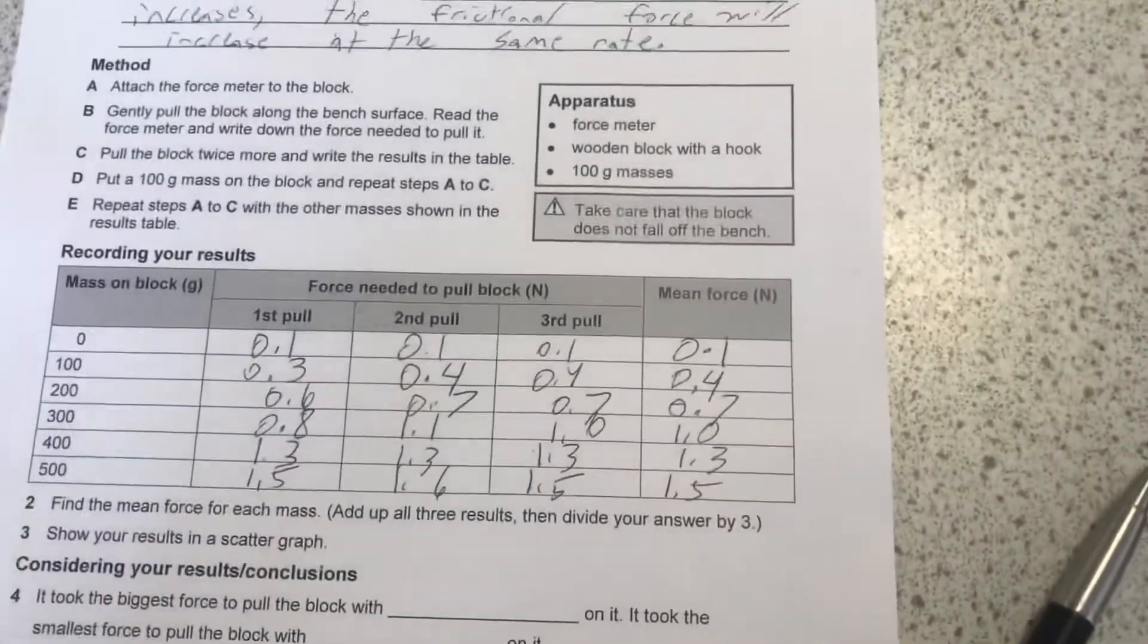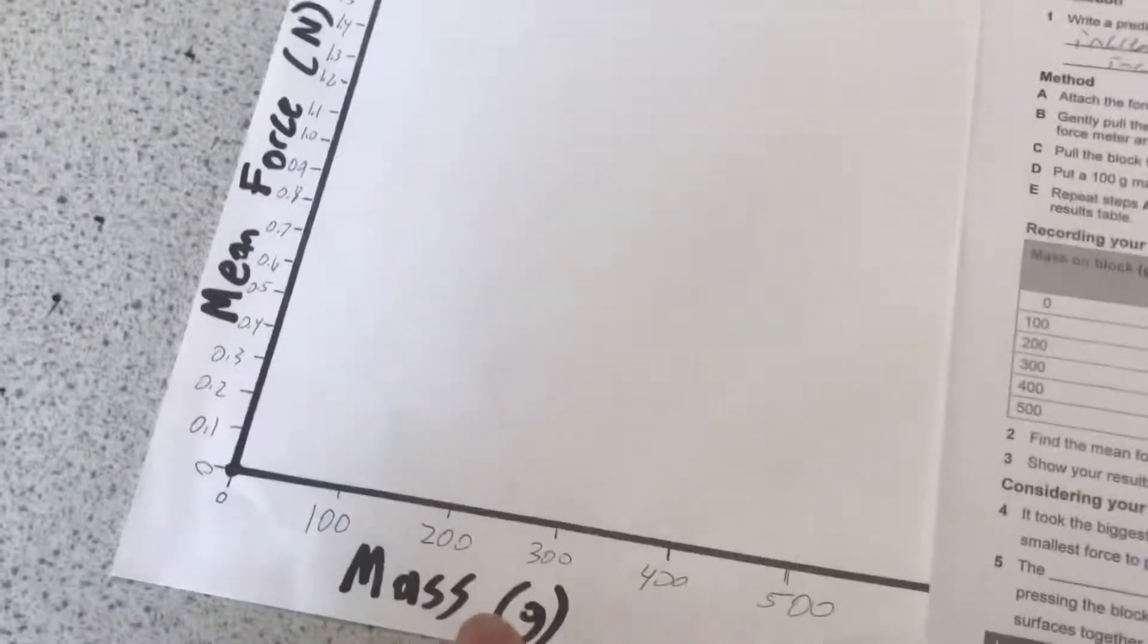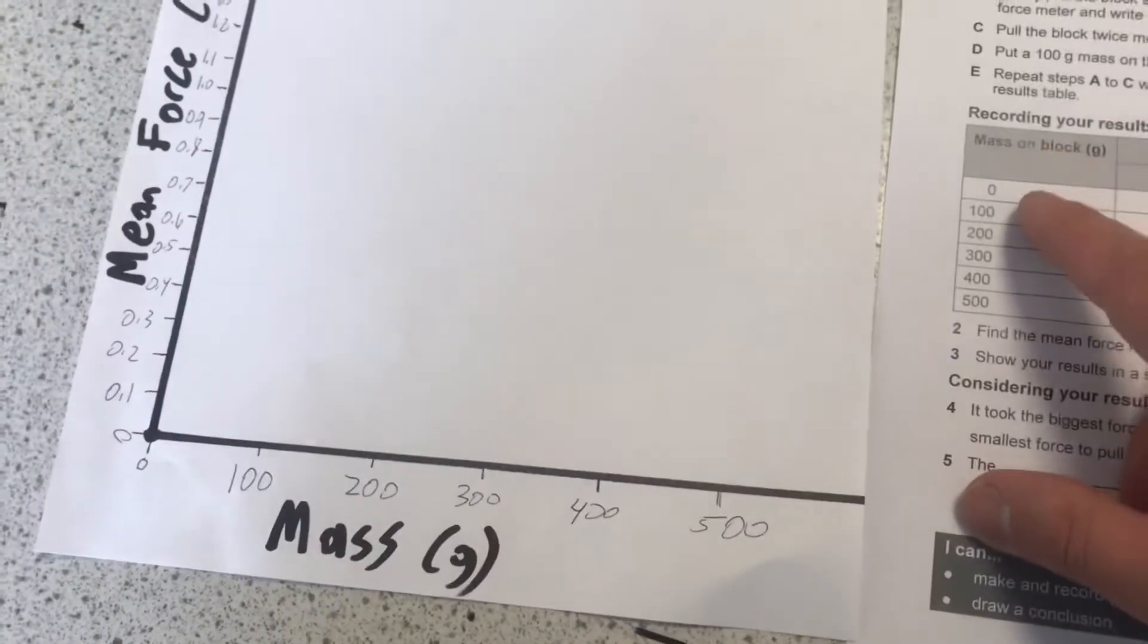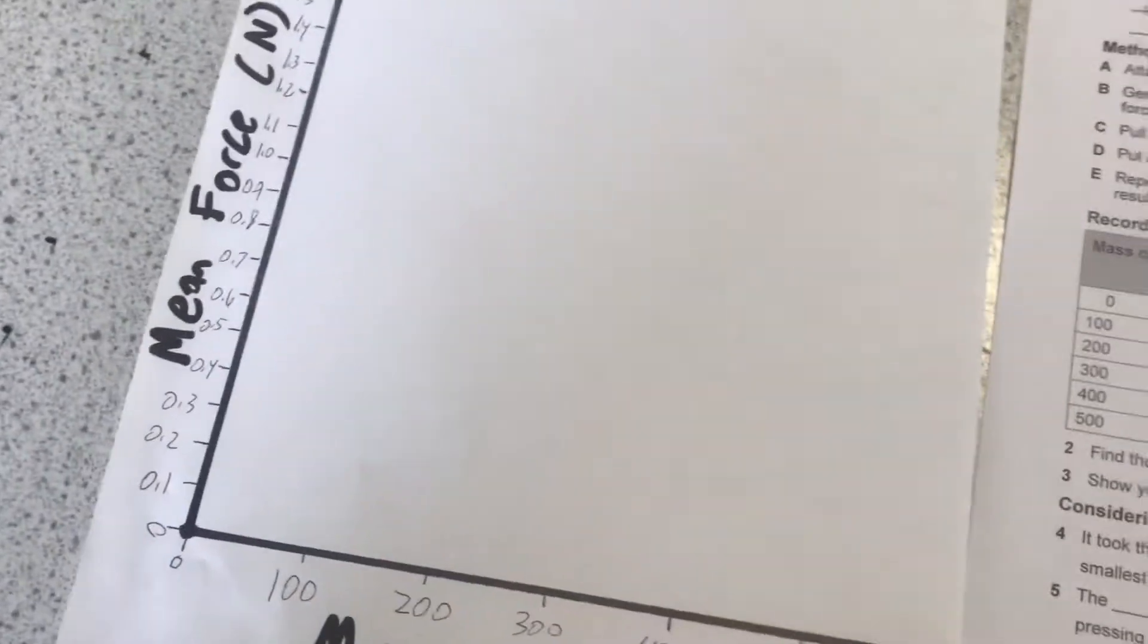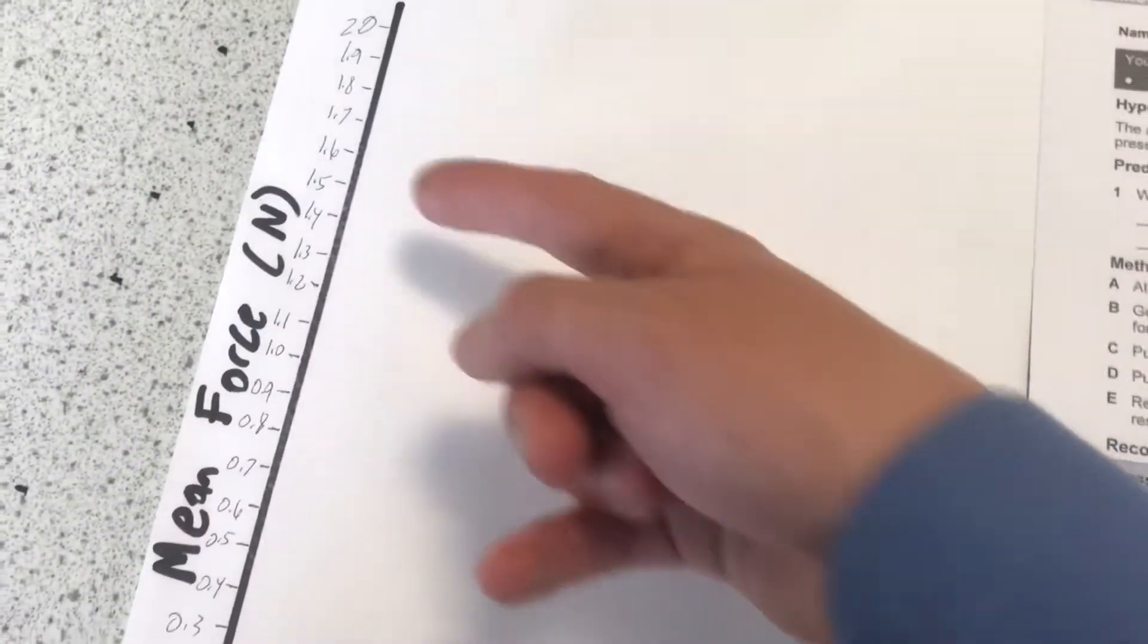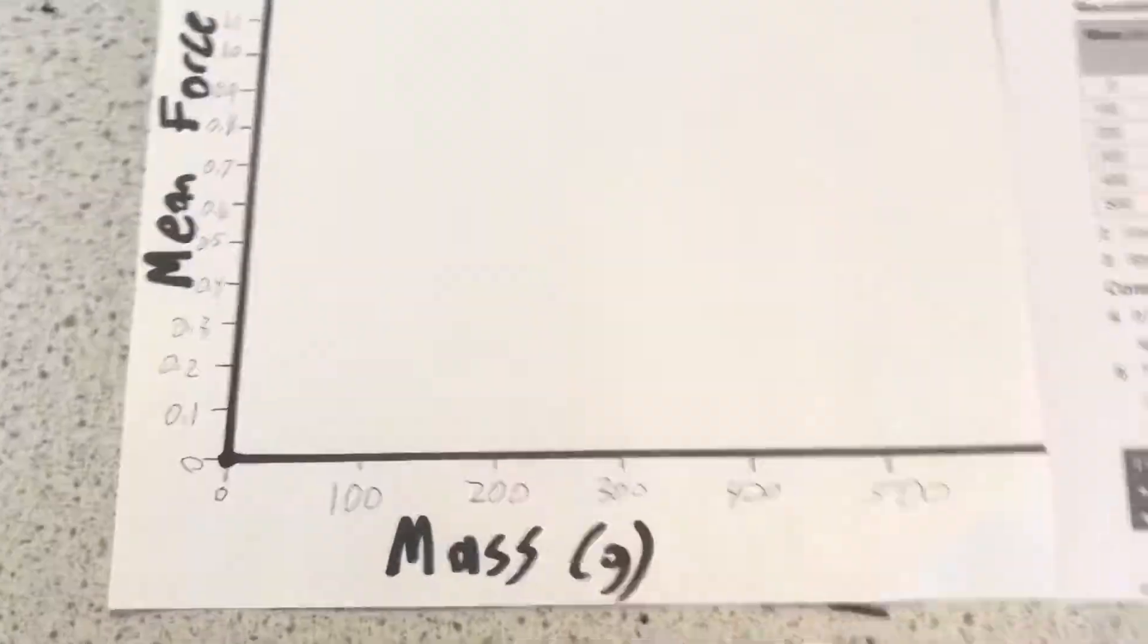The next step is to plot our results on a graph. When we are drawing a graph, our independent variable always goes on the x-axis. The independent variable is the information we know before the practical started. We knew the mass we are going to use. The dependent variable is what we measured during the investigation. We did not know the amount of force that it would result in.